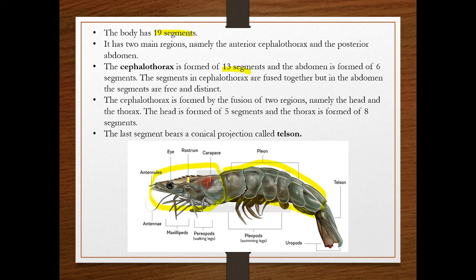The cephalothorax is formed of two portions: the head region and the thoracic region. The head has five segments and the thorax has eight segments, totaling 13 segments. The segments on the dorsal side are not visible because the cephalothorax is covered by an external tough covering called the carapace.